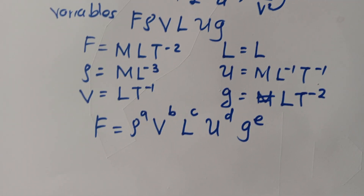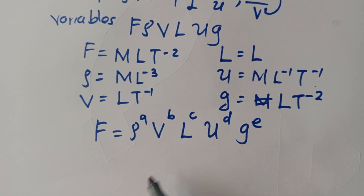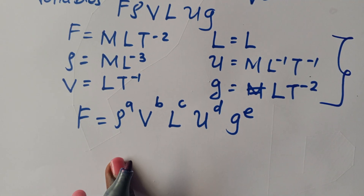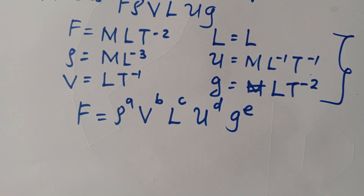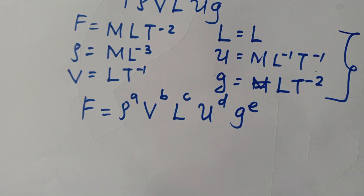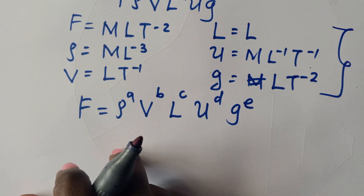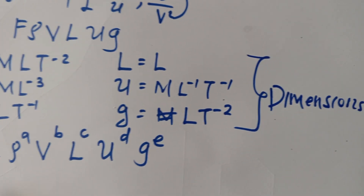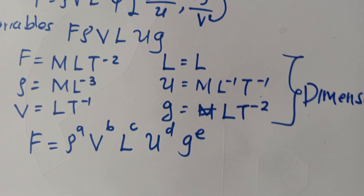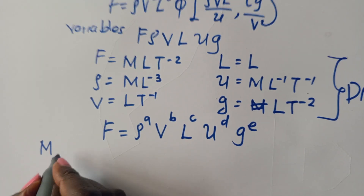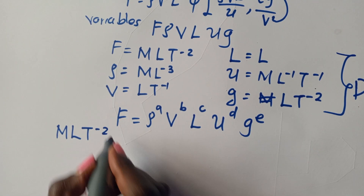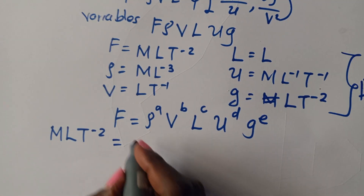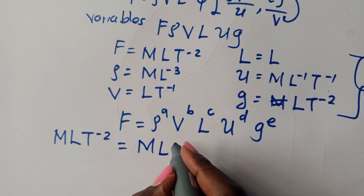Now bring in the variables in terms of their dimensions. For F we have M L T⁻². This is equal to: for rho, the dimensions are M L⁻³, raised to A.